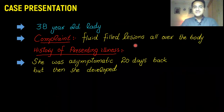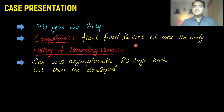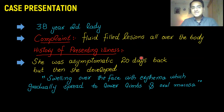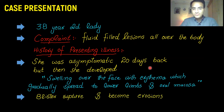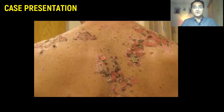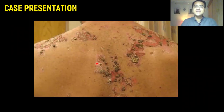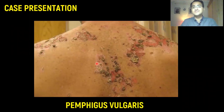History of presenting illness shows that she was asymptomatic 20 days back, but then she developed swellings over the face and erythema which spread to the lower limbs and oral mucosa. She developed blisters, those blisters ruptured and became erosions. A biopsy was taken and she was diagnosed as a case of Pemphigus vulgaris.